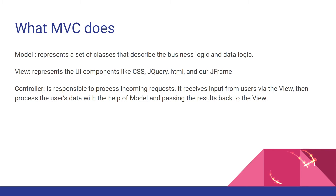So what does MVC actually mean, or what does it do? The M stands for model, and this represents a set of classes that describe the business logic and data logic. The V stands for view, and it represents the UI components like CSS, jQuery, HTML, and our JFrame.